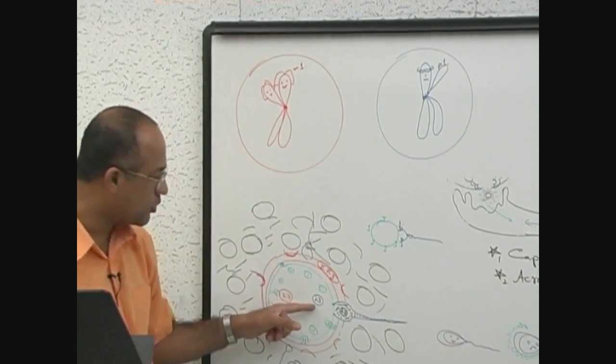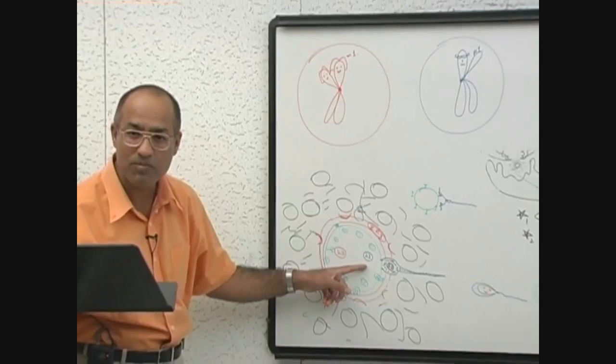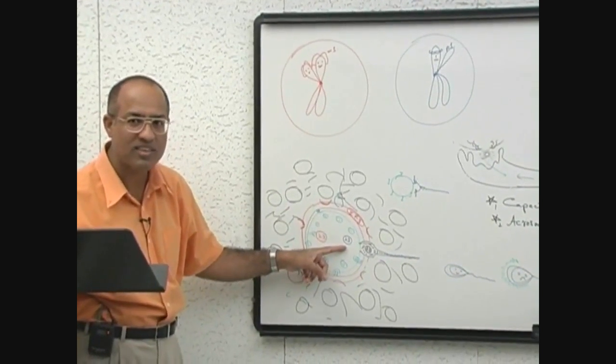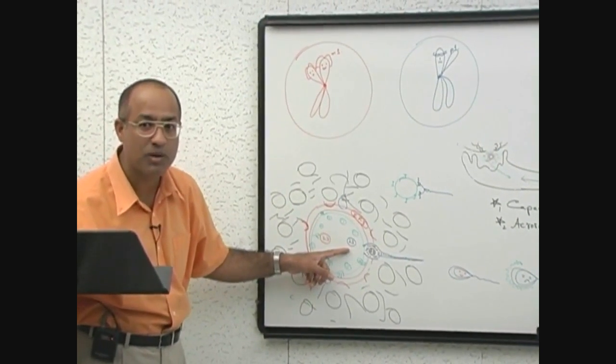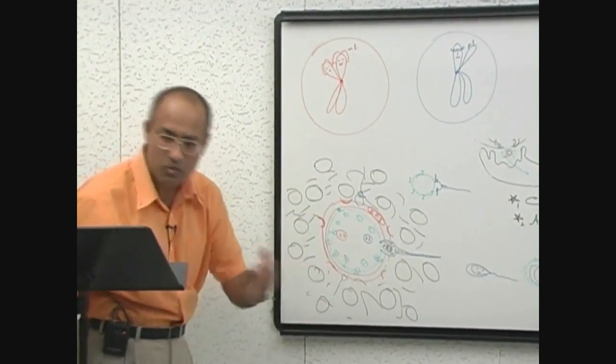So these will become 23 chromosomes with double genetic material. So 23 chromosomes which when it came it was 23 with 1N number, now it become 23 with 2N and this become 23 with 2N.